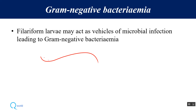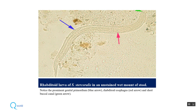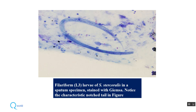It has been established that Strongyloides carries gram-negative bacteria on its surface, especially on the filariform larvae, so once they enter the blood, gram-negative bacteria are introduced as well. For diagnosis, rhabditiform larvae can be demonstrated in freshly passed stool, filariform larvae in sputum, and rhabditiform larvae or adult worms in duodenal washings or jejunal biopsy.